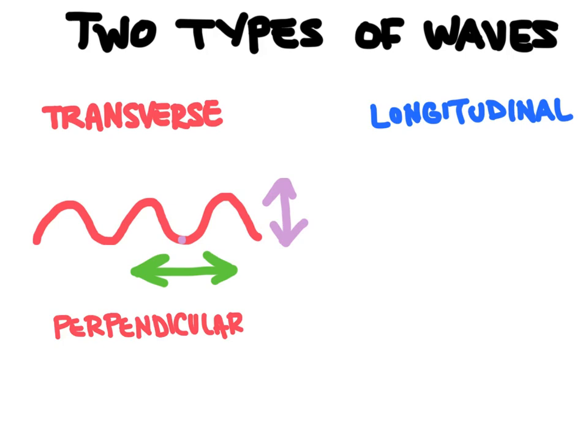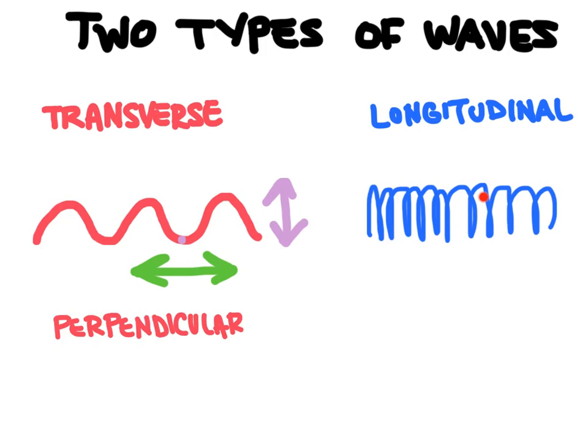Longitudinal waves are a little bit harder to visualize. This is actually the way that sound travels through the air. Sound travels using a longitudinal wave. And what happens is that it's kind of like a coil, like a coil slinky toy, that if we took one of those slinkies and we were to kind of just pinch in a section and release it.